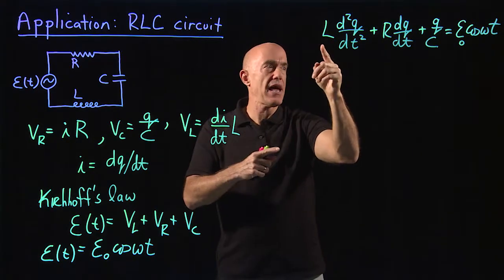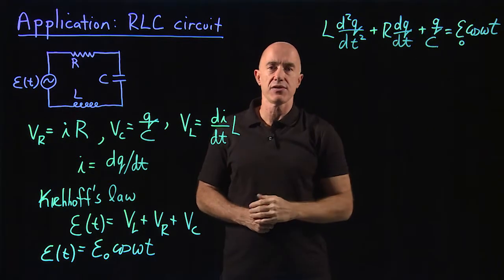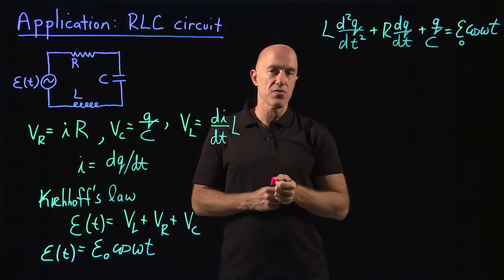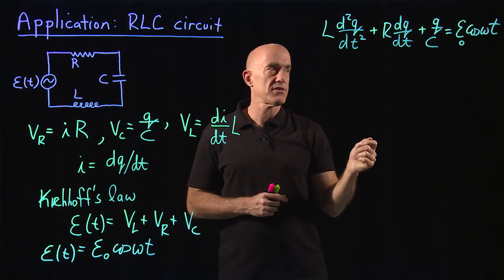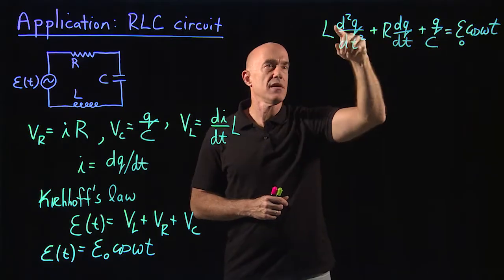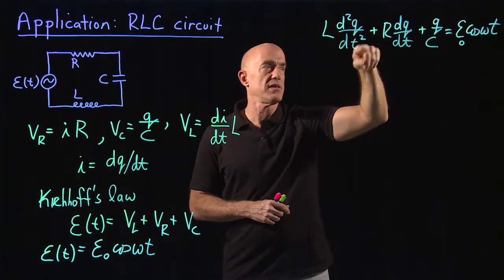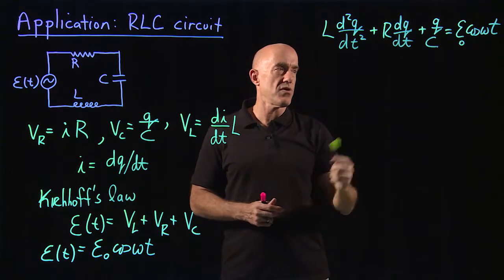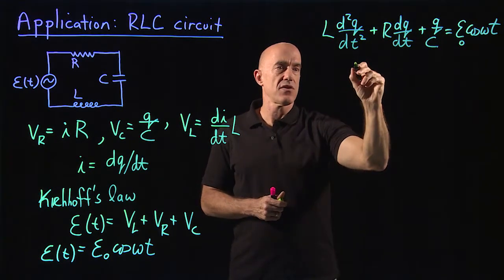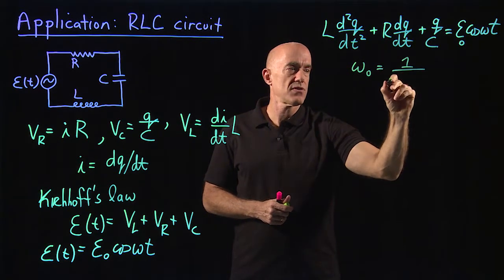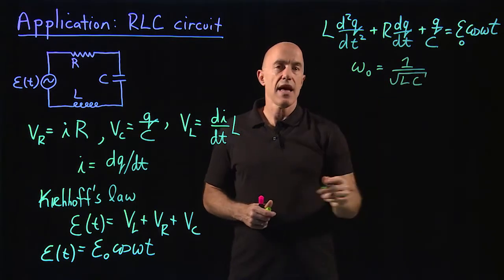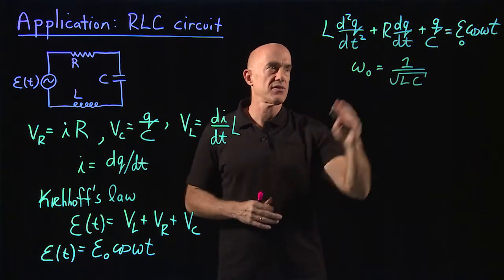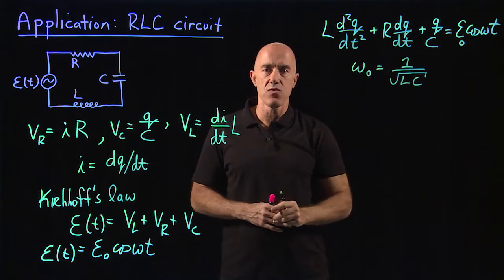If you divide through by L, you see this term here has a q over LC. If you remember our oscillator equation, x double dot plus ω₀² x equals some force, then the term ω₀² is the term multiplying q. And here it's equal to 1 over LC. So we can define an ω₀ equal to 1 over the square root of LC. And that's the natural frequency of this RLC circuit when you don't have a resistor, when there's no damping. This has units of 1 over time.